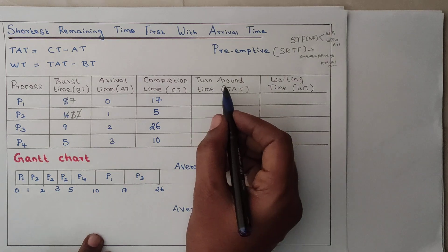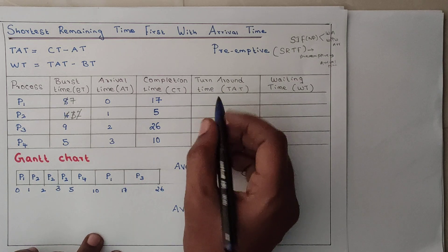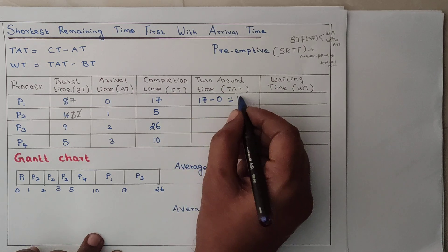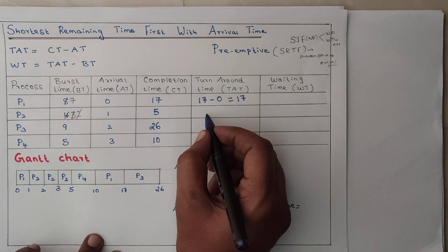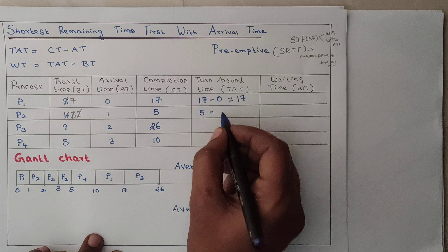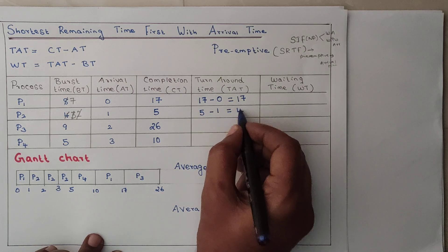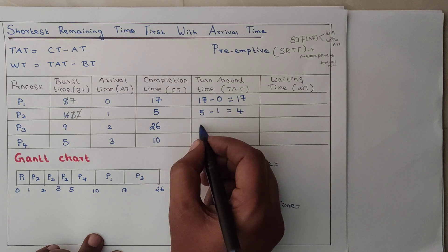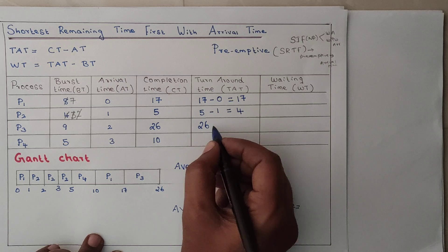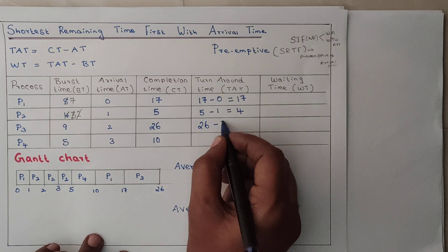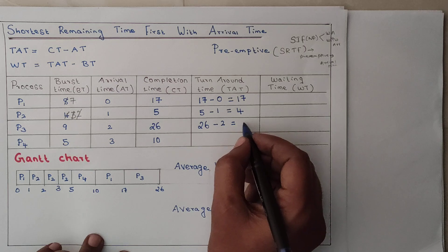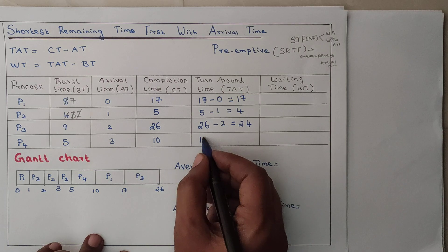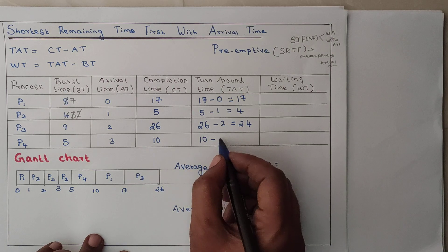Turnaround time equals completion time minus arrival time. For P1: 17 minus 0 equals 17. For P2: 5 minus 1 equals 4 milliseconds. For P3: 26 minus 2 equals 24 milliseconds. For P4: 10 minus 3 equals 7 milliseconds.